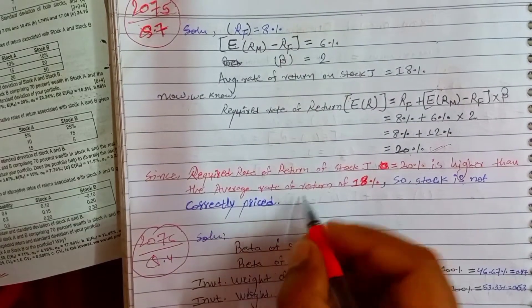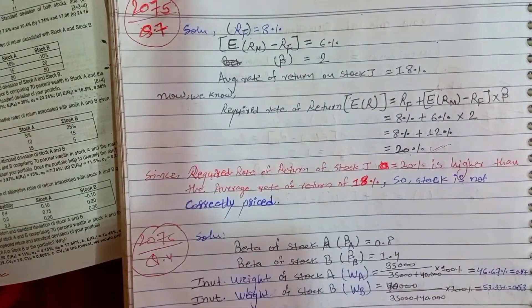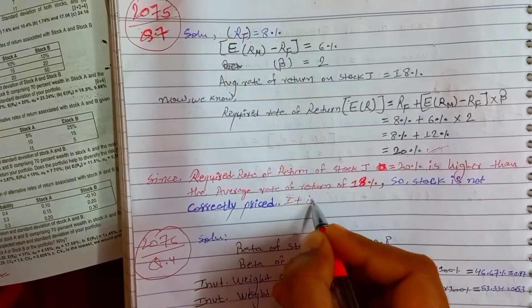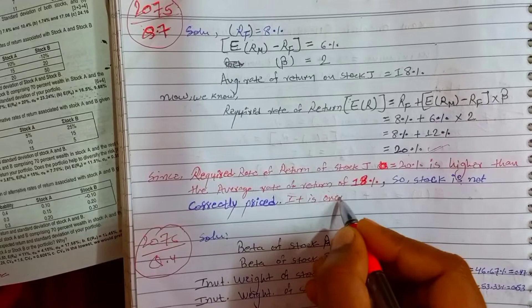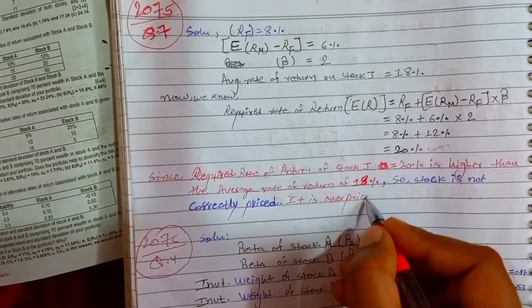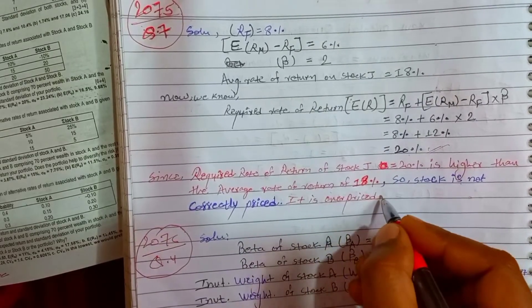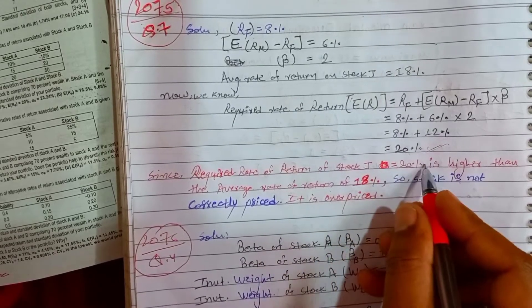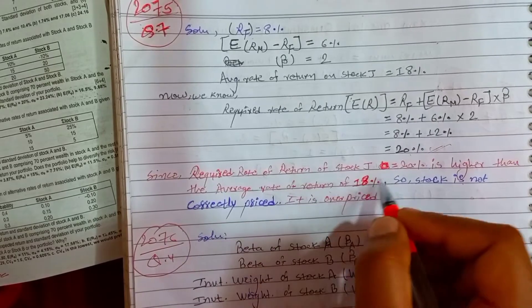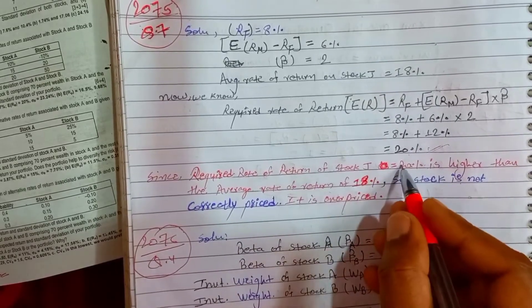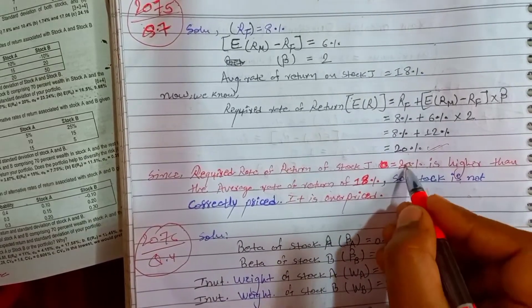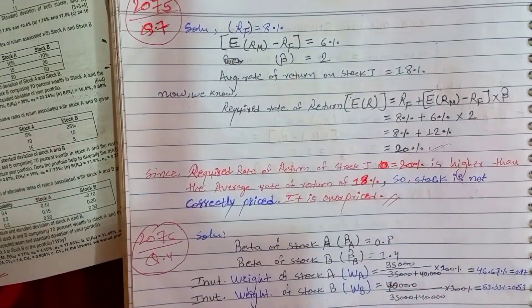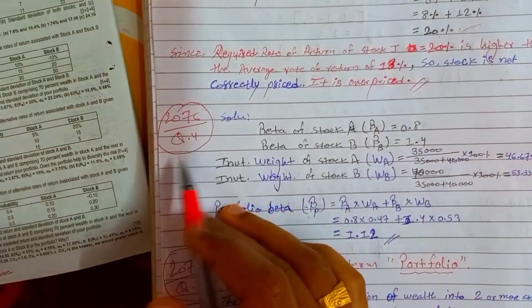Since the required rate of return (20%) is higher than the average rate of return (18%), the stock is overpriced. This was page 276, question 4.